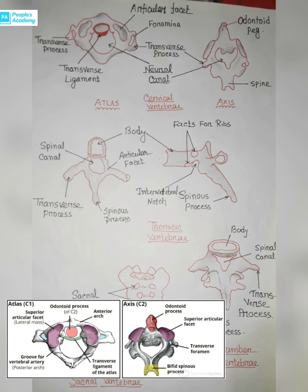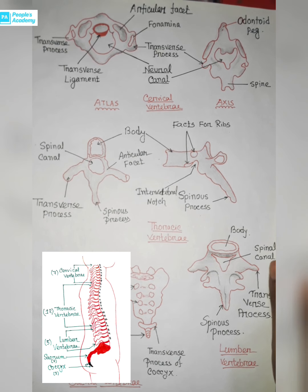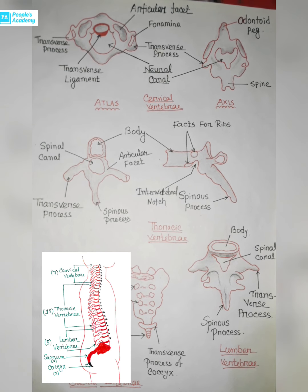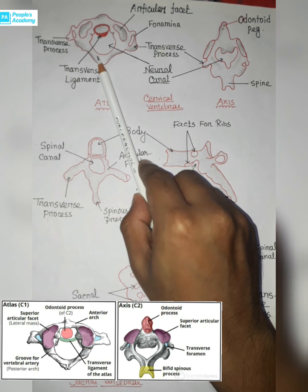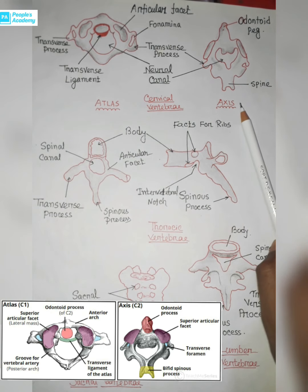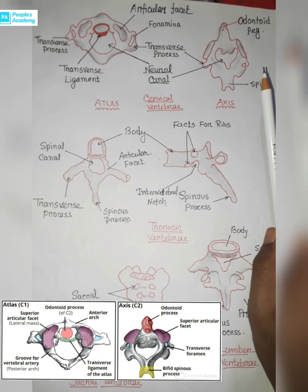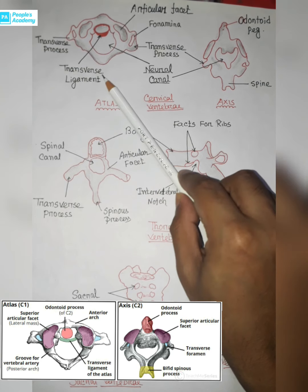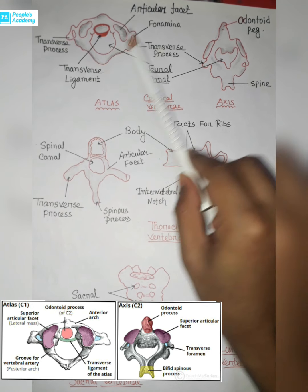Cervical vertebrae are small in size and present in the neck region. The first cervical vertebra, atlas, and the second cervical vertebra, axis, are very important to remember. Atlas supports the head.